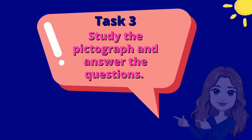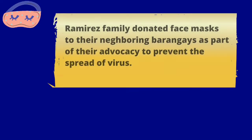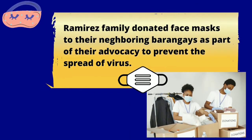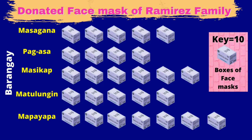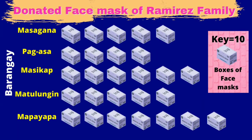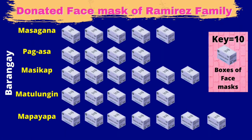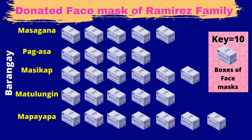Let us proceed to learning task number 3: study the pictograph and answer the questions. Ramirez's family donated face masks to their neighboring barangays as part of their advocacy to prevent the spread of the virus. The title of the pictograph is Donated Face Masks of Ramirez's Family. In a pictograph, there is a key — also called the legend. One picture of a box of face masks is equivalent to 10 boxes of face masks.